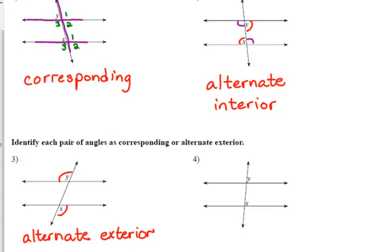There is another pair of those as well. These other two angles on the outside, on opposite sides of the parallel. Number four is another example of more corresponding angles.